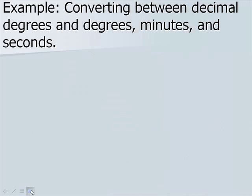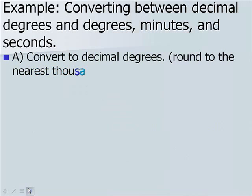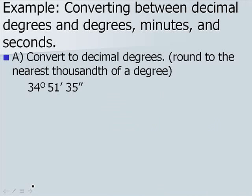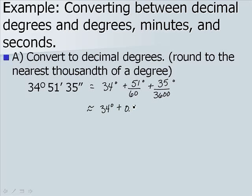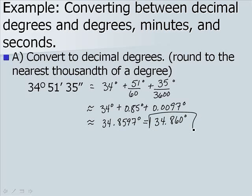Now let's convert between decimal degrees and degrees, minutes, and seconds by hand. We want to round to the nearest thousandth of a degree and convert 34 degrees 51 minutes 35 seconds. This is equivalent to 34 degrees, plus 51/60 degrees, plus 35/3600 degrees, since minutes is 1/60th of a degree and seconds is 1/3600th of a degree. On the calculator: 34 plus 0.85 plus 0.0097, which gives approximately 34.8597 degrees, or 34.860 degrees when rounded.